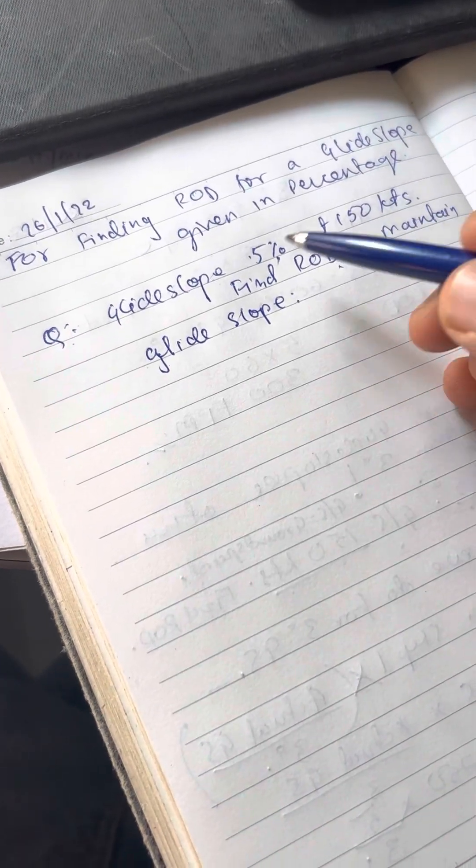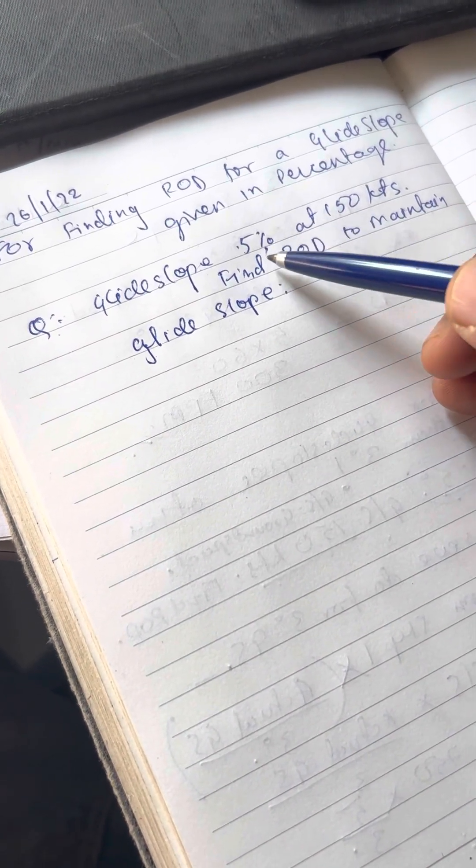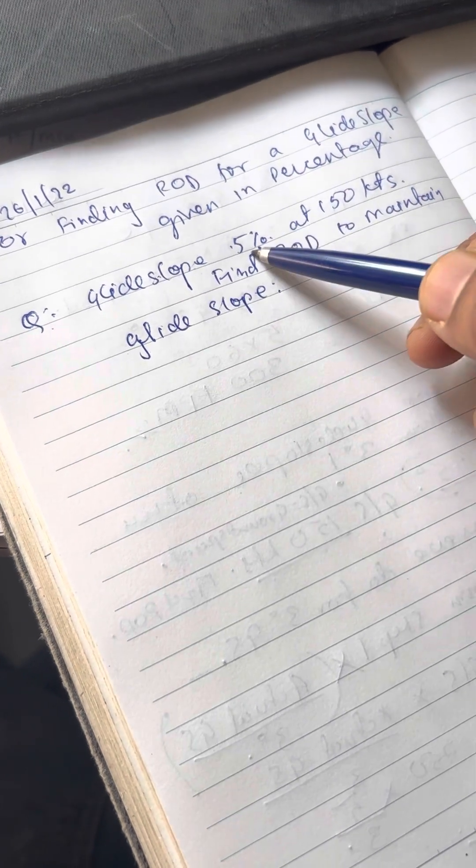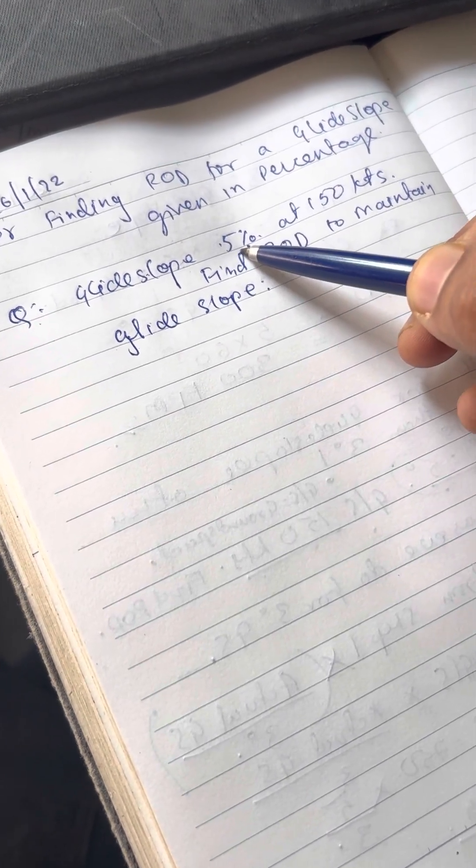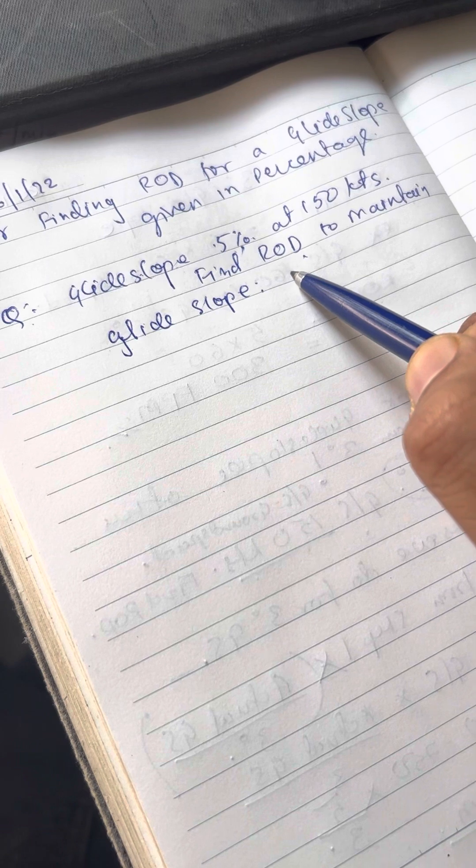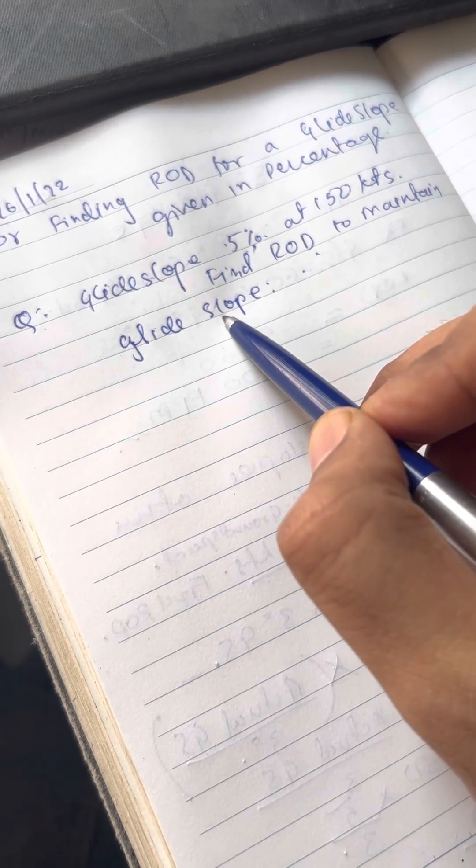Okay, so we will often be given questions in competitive exams where glide slope will be given to us in percentage, not degrees, and we are required to find rate of descent to maintain on that particular glide slope.